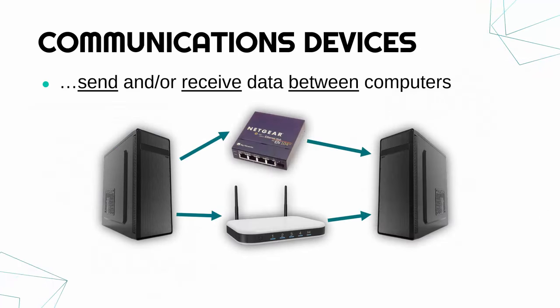The final category are communications devices. These were covered in their own video in much more detail. Examples of these are things like hubs, switches, modems, routers, wireless access points — things which enable you to send and or receive data between computers. Generally, input and output devices are working on one computer system, but communications devices work across two or more devices. Really, they enable you to work over networks, but we'll talk about these in more detail in a future video.